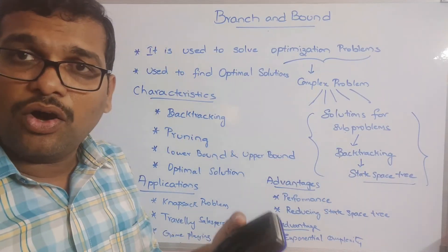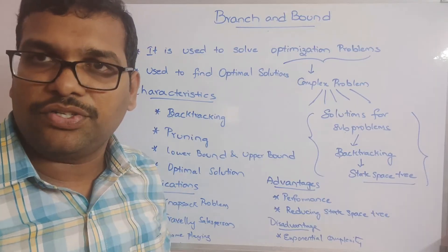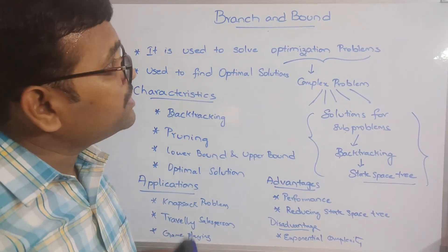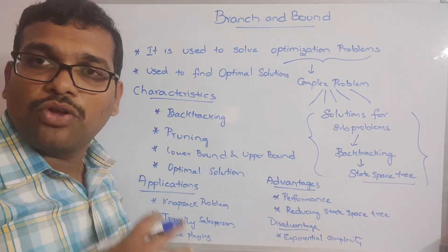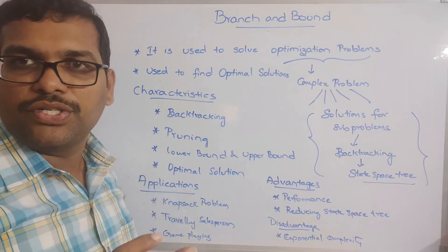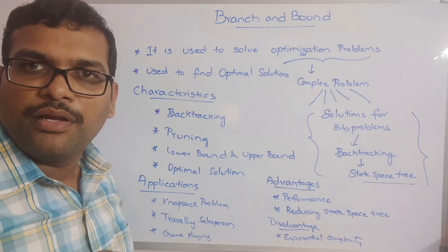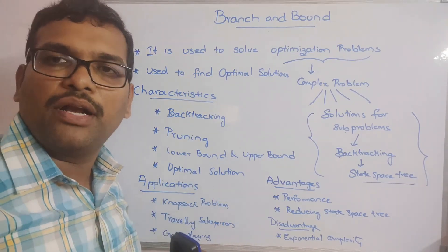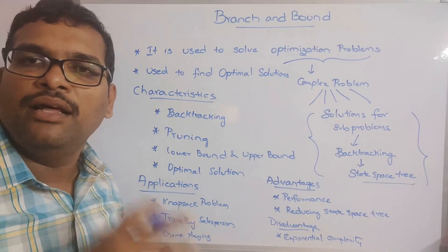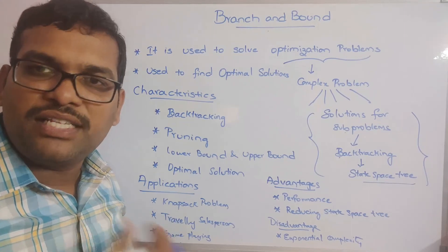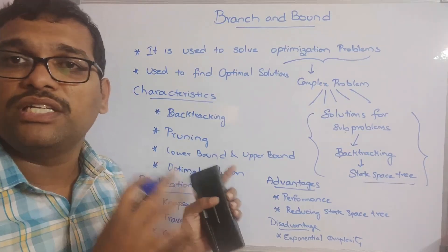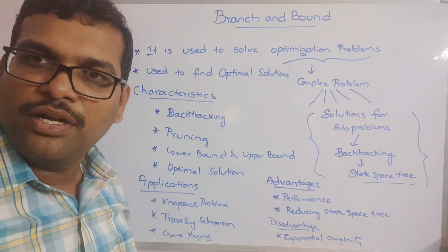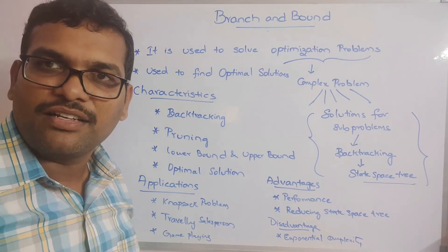One more important point: backtracking uses depth-first search — in all previous applications we went depth-first. But in Branch and Bound, problems are solved using breadth-first search, not depth-first search. Completion of one level happens before moving to the next level. In further sessions, we'll solve the Knapsack problem and the Traveling Salesperson Problem using Branch and Bound methodology.